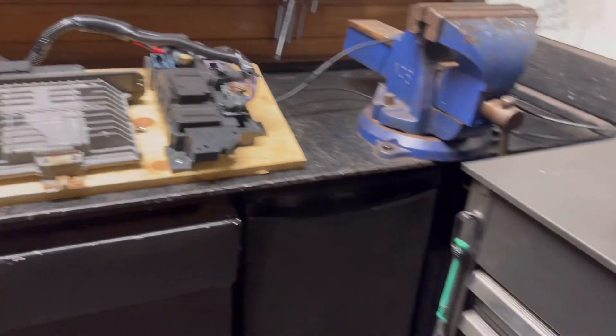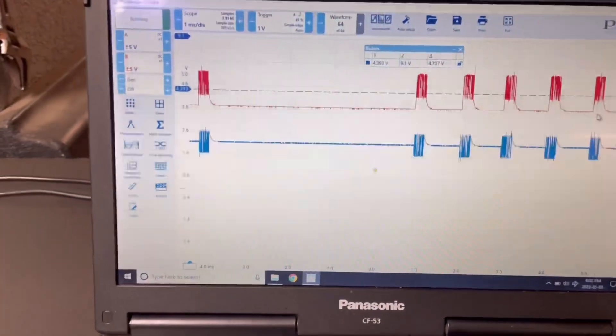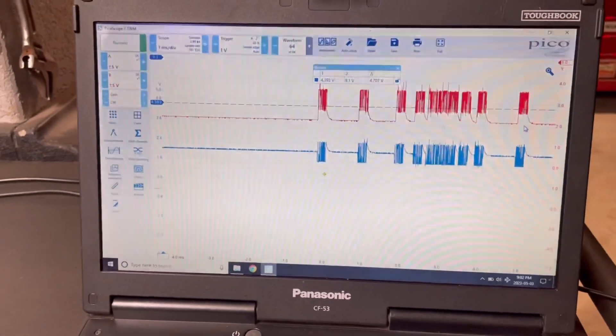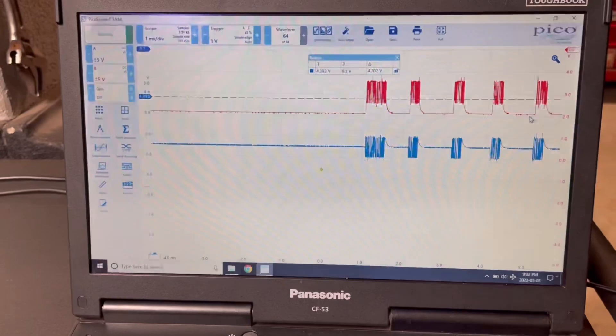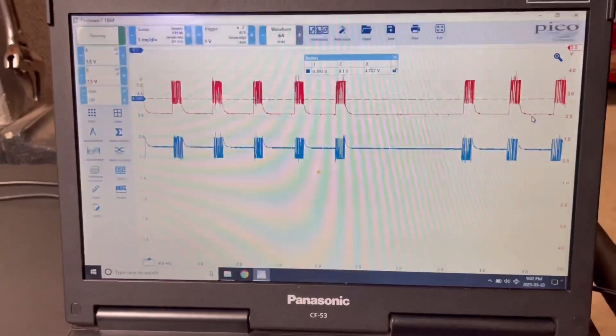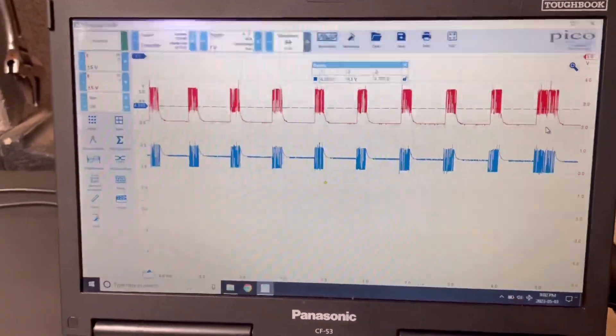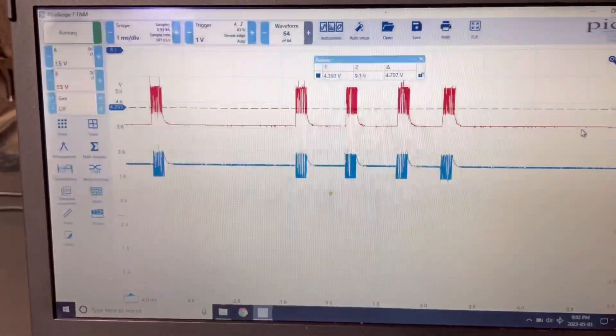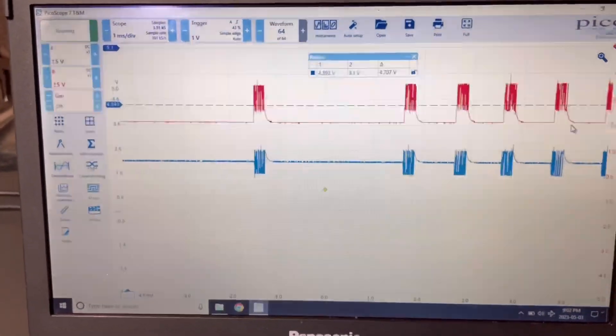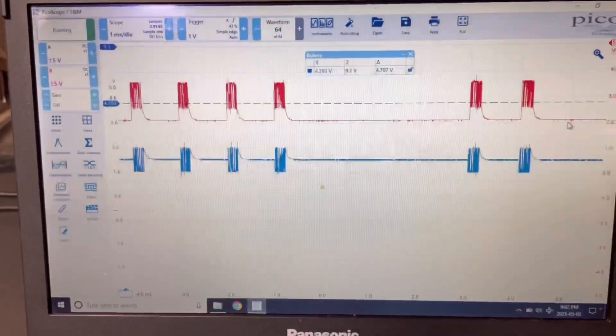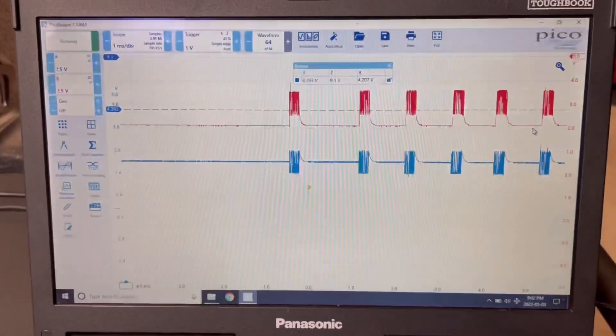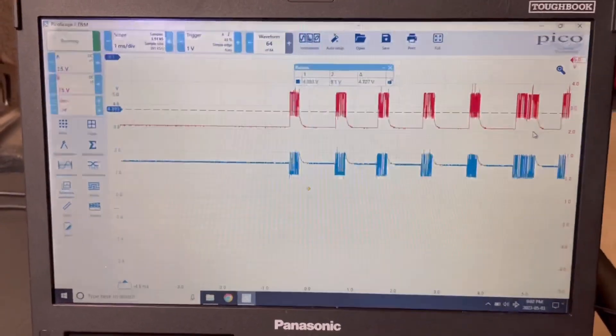So we've got our oscilloscope hooked up, and before we go any further I'm just gonna, we're gonna go back to the known good TCM readout and just compare the two. So we're recording the screen, we're gonna be able to go back and compare both readings and see if there's anything that we can observe on our screen.